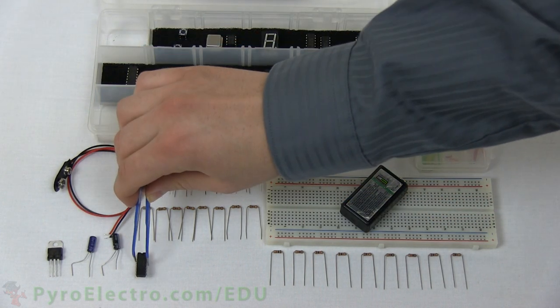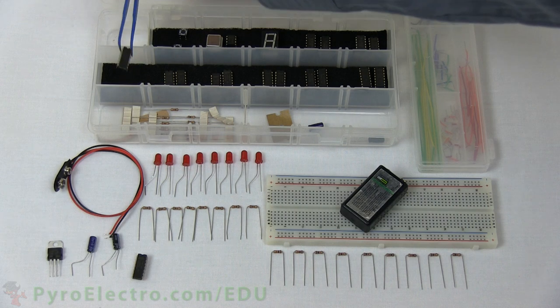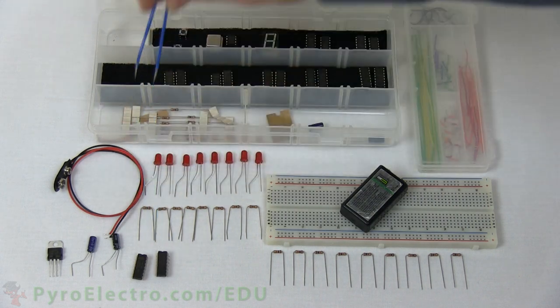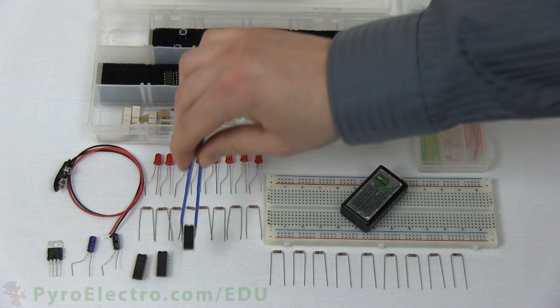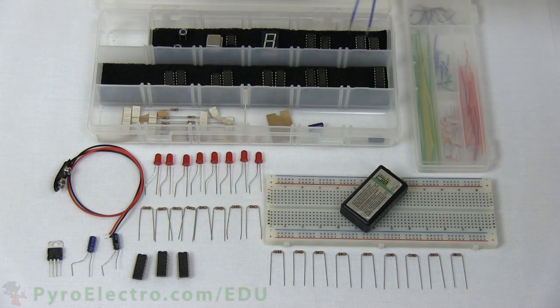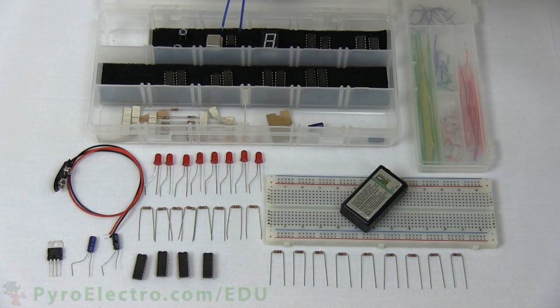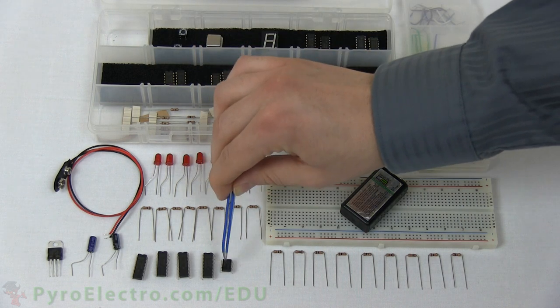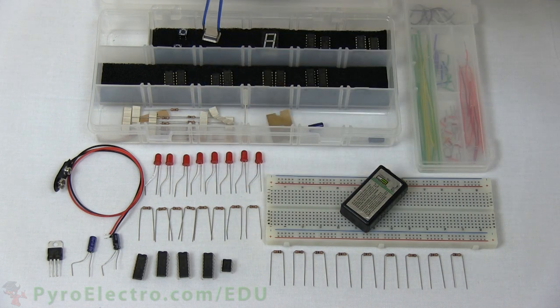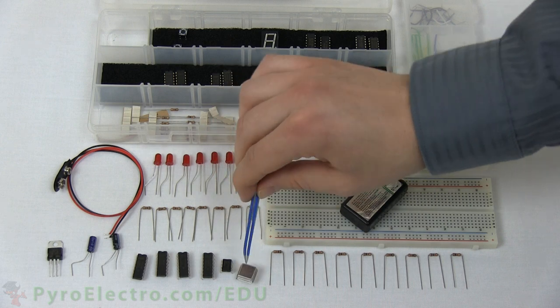1-74HC00, 1-74HC02, 1-74HC138, 1-74HC193, a 555 timer, and if you want, for fun, you can use the crystal oscillator for the system clock to see how it works.